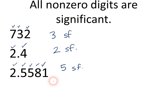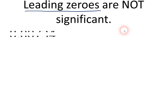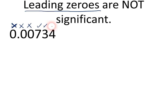Now, if there are non-zero digits, the other type of number would be a zero. We're going to classify zeros based upon where they appear in the number. Here's the first rule about zeros: leading zeros are not significant. Leading zeros are zeros that appear at the beginning of a number. Here's an example: 0.00734. We have three zeros at the beginning — those are not significant, so I'll put little x's above them. The 7, the 3, and the 4 are significant, so this number has three significant figures.